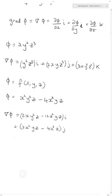And then finally, differentiate partially with respect to z to get our coefficient for k. So we would have x²y² minus 4x³y k.